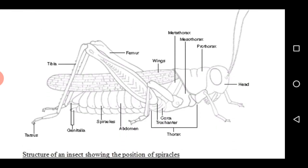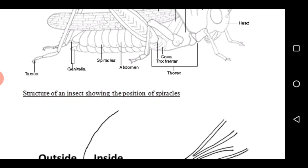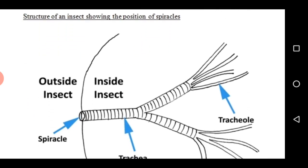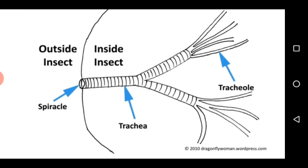Looking at this diagram — if you look at the abdominal region of this organism, you are going to see tiny pores, that is the tiny opening of the spiracles. Through these tiny openings, gases enter into the organism. The spiracles lead to the trachea internally, and the trachea branches into many tracheoles which get into every living cell in order to supply oxygen. White carbon dioxide produced by the body cells is also sent out through the tracheoles to the trachea and then to the spiracles, which take it out of the body.